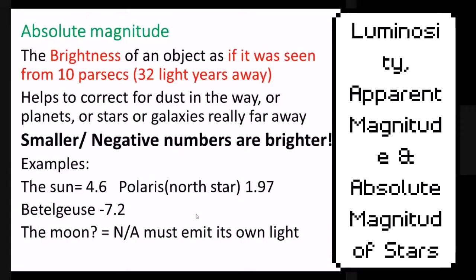Luminosity and absolute magnitude are somewhat related because we base our luminosity off the star's absolute magnitude. For absolute magnitude, imagine taking all the stars and lining them up 32 light years away from you, and then removing all the gas, dust, galaxies, and anything that's in the way. The dimmer the star is, the higher the number — so it's kind of like golf. The brighter it is, the lower the number.